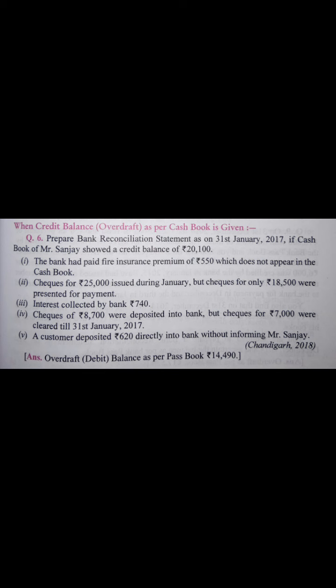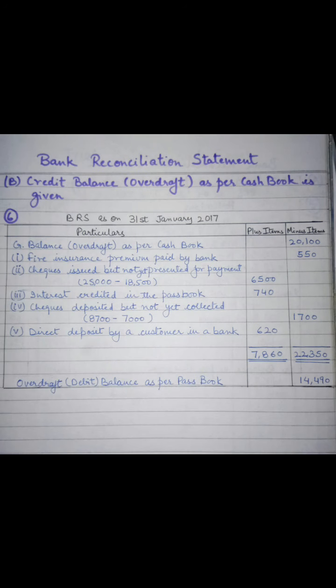The third entry is interest collected by the bank, 740 rupees. We have to add this amount again in our plus item column. The third entry is written here as interest credited in the passbook, that is 740 rupees.